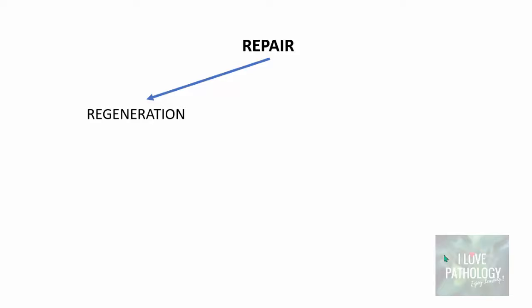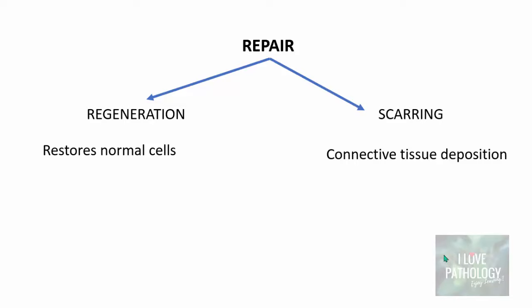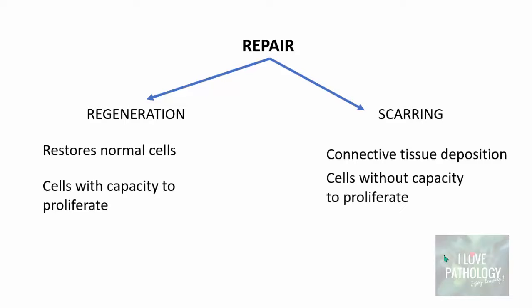Repair occurs via two processes. One is regeneration, which means restoration of normal cells. And two is scarring, which means connective tissue deposition. Restoration of normal cells in regeneration occurs only in tissues which have cells with the capacity to proliferate, whereas scarring occurs in tissues where cells don't have the capacity to proliferate.